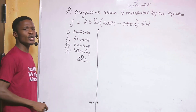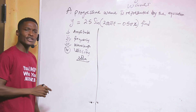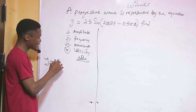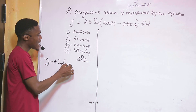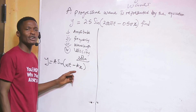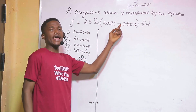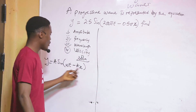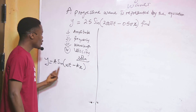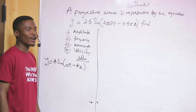First, we need to establish the standard equation of a progressive wave: y equals A sine(ωt minus kx). I am using minus kx here because the question also has a minus sign in that position.